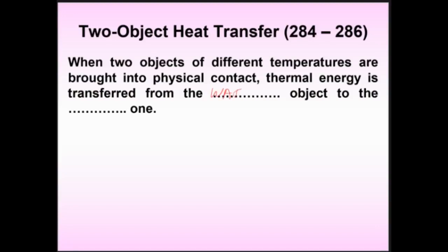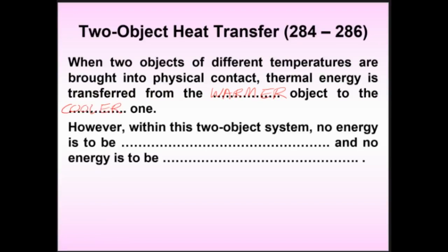Heat is always transferred from the warmer to the cooler object. Within a two-object system, whatever thermal energy one object loses must be fully gained by the other — not partially — because partial gain would mean energy leaked out of the system, violating conservation of energy. To fix that, you redefine your system to include everything.